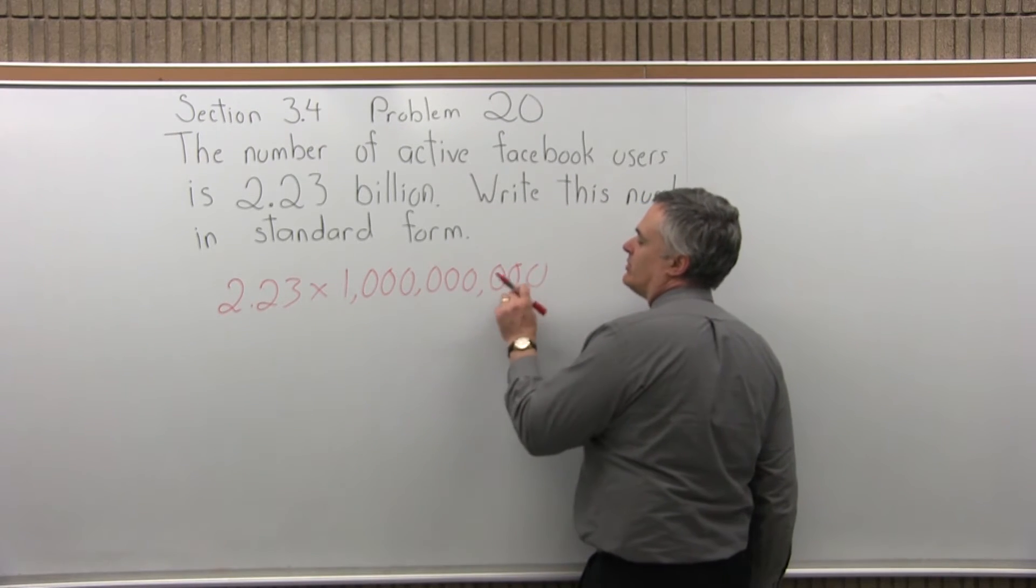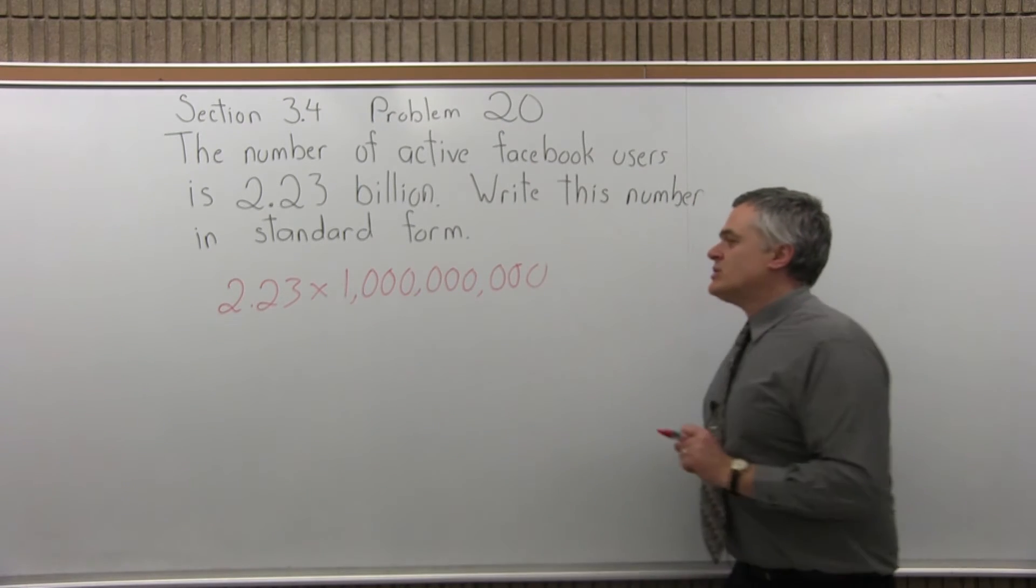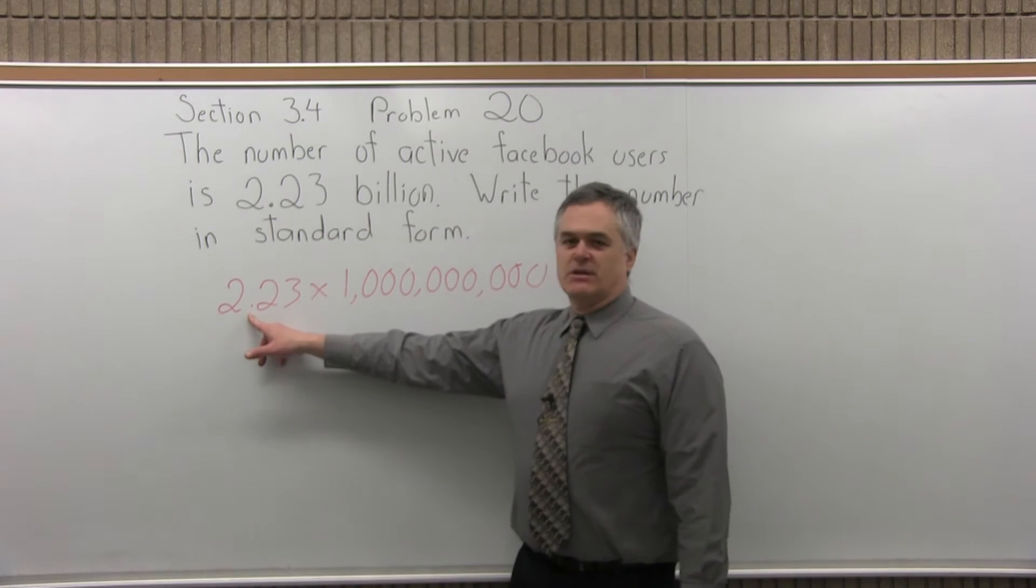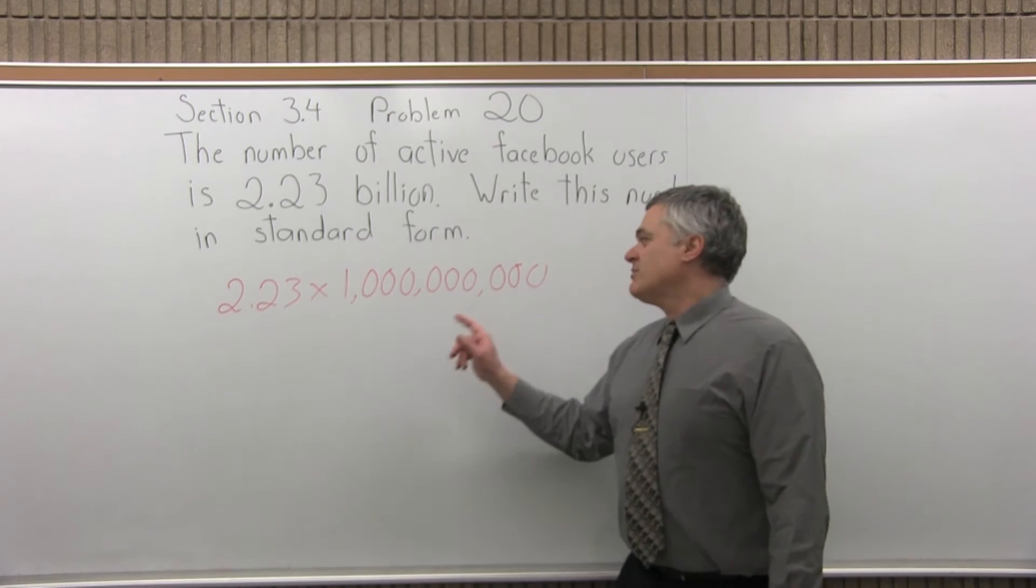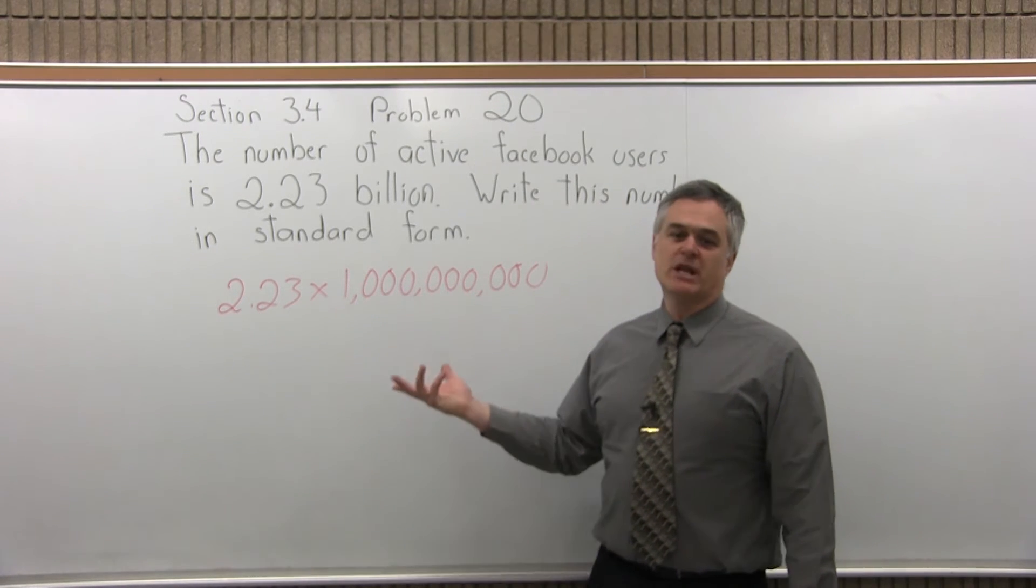That's 1, 2, 3, 4, 5, 6, 7, 8, 9 zeros. So to do this multiplication, really what you do is you take the decimal where it's initially written and move it as many places to the right as you have zeros. So nine zeros, you move it nine places.